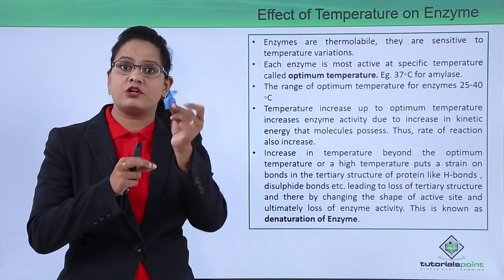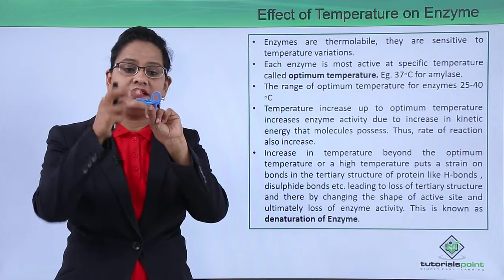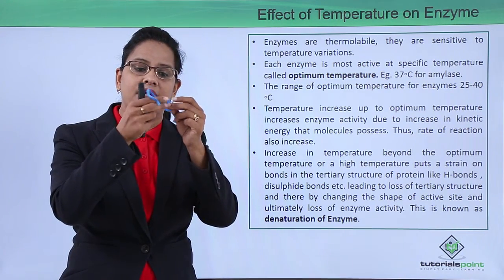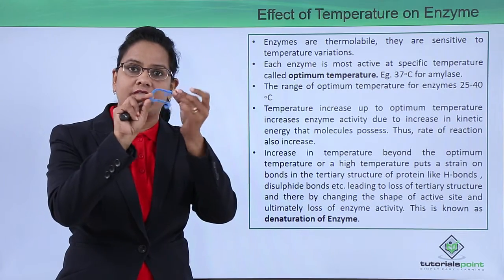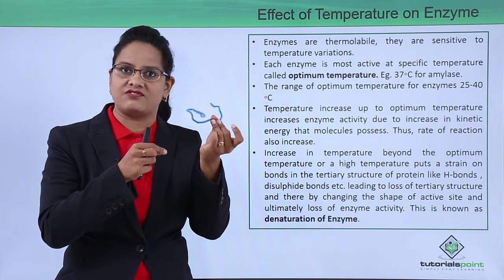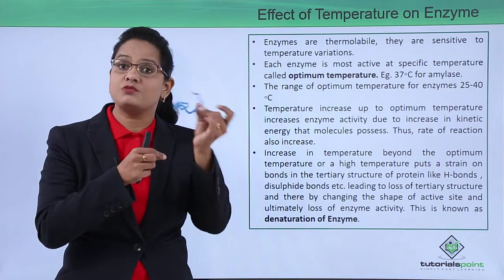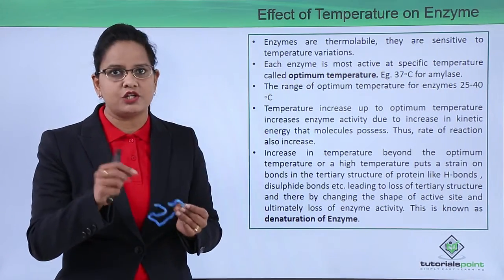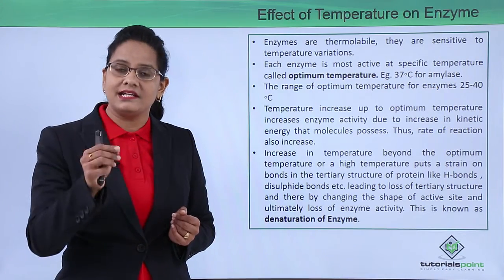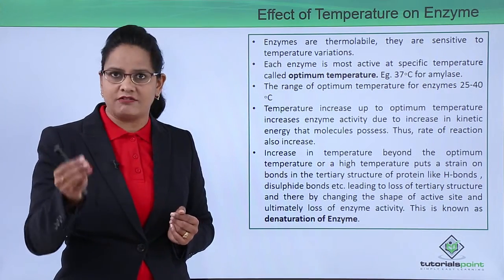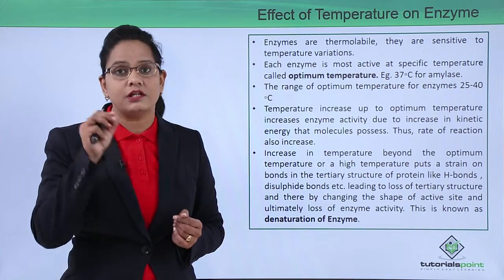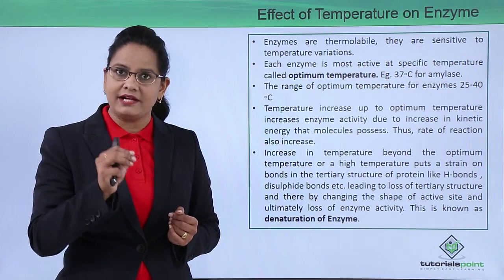This is the tertiary structure of the protein — the enzyme with its active site having a specific shape. As temperature increases, these bonds start breaking and the structure starts unfolding. The bonds have been broken because of high temperature, and the enzyme no longer has an active site on which the substrate can bind. This phenomenon is known as denaturation of the enzyme — loss of the tertiary structure of the protein due to increased temperature leads to loss of enzyme activity because of the change in shape of the active site.